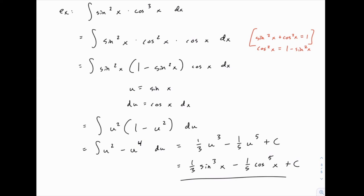Already thinking ahead to our process — notice what we did here. We picked off one cosine and set it aside, then wrote the remainder in terms of sine so that our u substitution would work, letting u equal sine of x. If we reversed this and had sine cubed times cosine squared, we would do the opposite: reserve one copy of sine and rewrite the other sine powers in terms of cosine, letting u equal cosine. So the helpful thing to look for is an odd power to begin with.